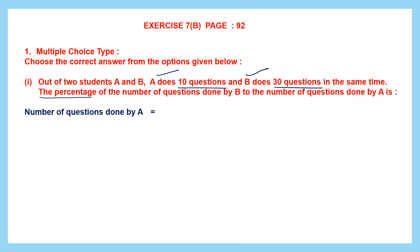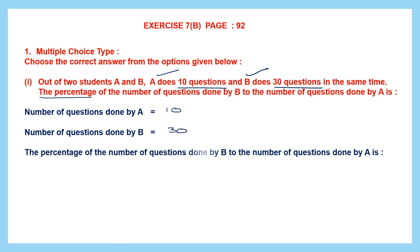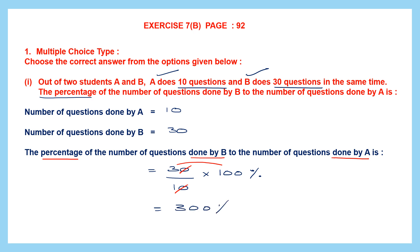So what is given to us? Number of questions done by A is 10, and number of questions done by B is 30. We write B's number first — 30 over 10 — and since we need the percentage, we multiply by 100%. Cancel the zeros, then 3 into 100% gives us 300%.